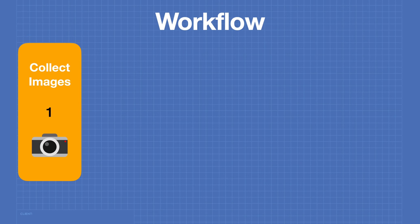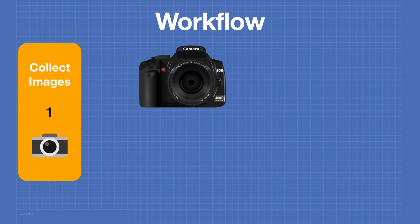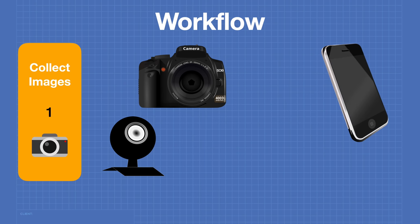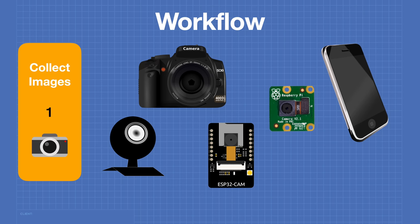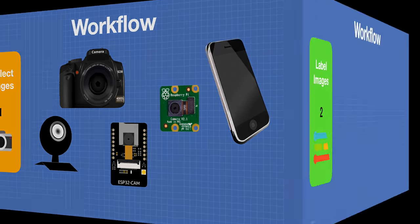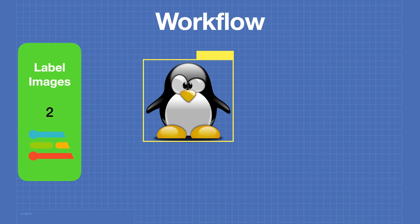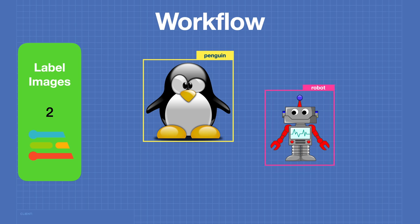In step one we collect images — we could use a camera, existing images from an image bank, a webcam, a phone, a Raspberry Pi, or the ESP32 cam itself. Today I'll show you how to use both the ESP32 cam and the webcam. Step two is labeling the images. We'll use Edge Impulse to draw bounding boxes around the images and give them a label. This is the most time-consuming step, but the more accurately you do it the better results you'll achieve.